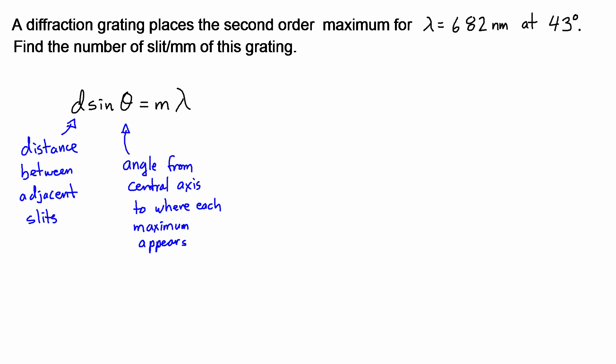m is the index so when m is equal to 0 that's right along the central axis. First order would have m equals 1 and second order would be m equals 2. For third order m equals 3 and so on. In this problem we're told that it's the second order therefore we're going to use m equals 2. And the last thing, λ, is the wavelength of light.